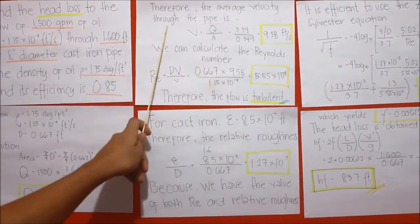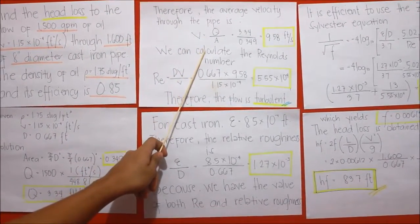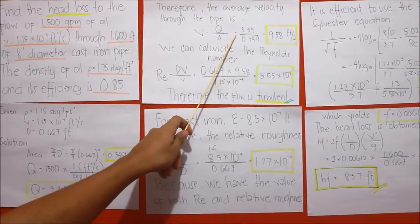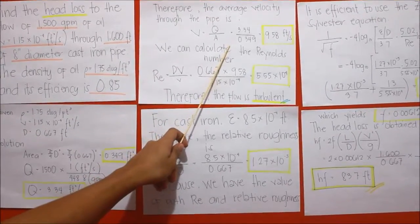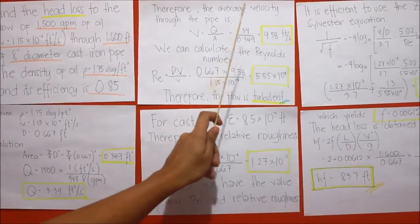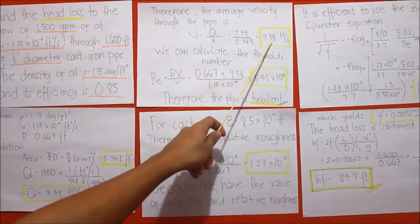Therefore, the average velocity through the pipe is V equals Q over A, where Q equals 3.34 over the area of 0.349, and come up with the answer of 9.58 feet per second.